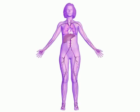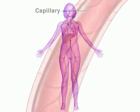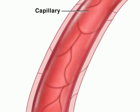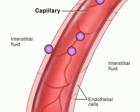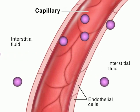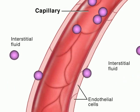The capillary wall is composed of a single layer of endothelial cells. The drug molecules diffuse across the endothelial cells of the capillary, into the surrounding interstitial fluid, and then into tissues.